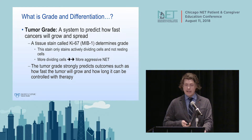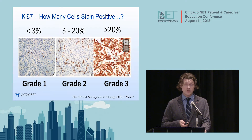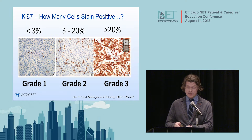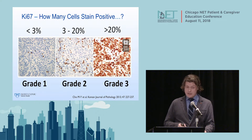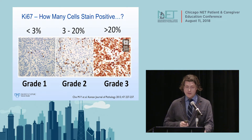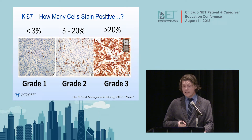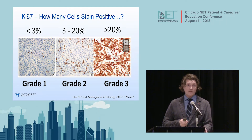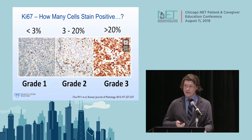The grade will predict outcomes: how fast the cancer will grow, how it will respond to therapy, and it can even predict how long a person will live. We take a slice of tissue, apply the Ki-67 stain, and count the number of positive cells. A grade one tumor shows mostly blue resting cells with very few brownish dots—most cells are in a resting state. A grade three tumor has almost all brown cells, meaning nearly all are actively replicating and growing.